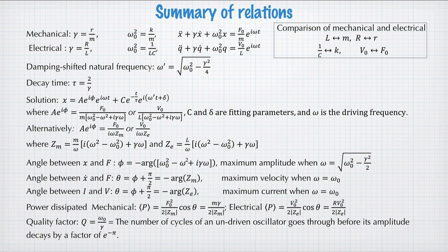And finally, here's a summary of all the different relations that we've used throughout this section on damped driven harmonic oscillation. So relationships between mechanical and electrical oscillators, the damped natural frequency, and the undamped natural frequency, and all the different values of the angle of impedance and everything else.